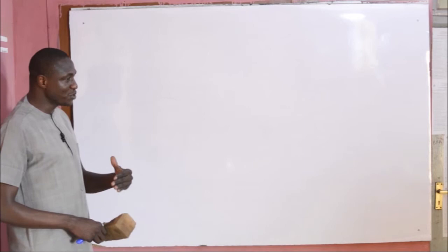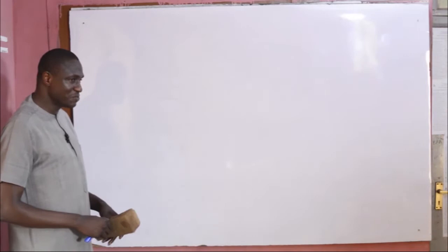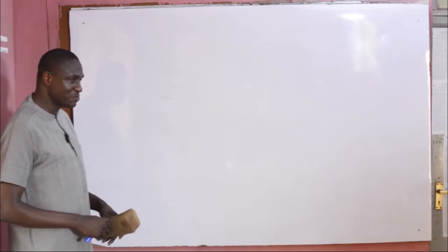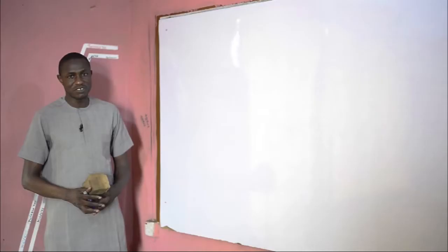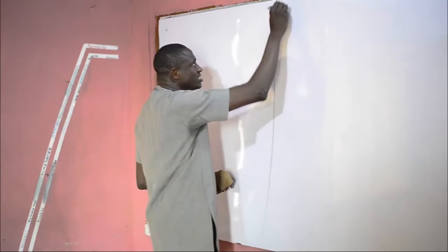At the end of this class, you are expected to be able to state each of those rules, as mentioned in the previous episode. We are also going to look at one or two exercises on how you are likely to be asked questions on quantum numbers of electrons as well as their arrangement in an atom or ion. The first rule we will be considering today is the Aufbau principle.